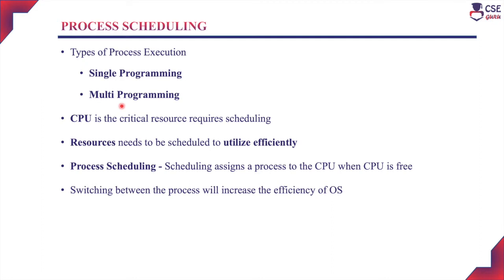During execution, if any interrupt or any I/O event occurs, the job will go to its waiting state, and during that time the CPU will be free. When the CPU is free, another job in the ready state will be assigned to the CPU for execution, so more than one process will execute with the CPU.